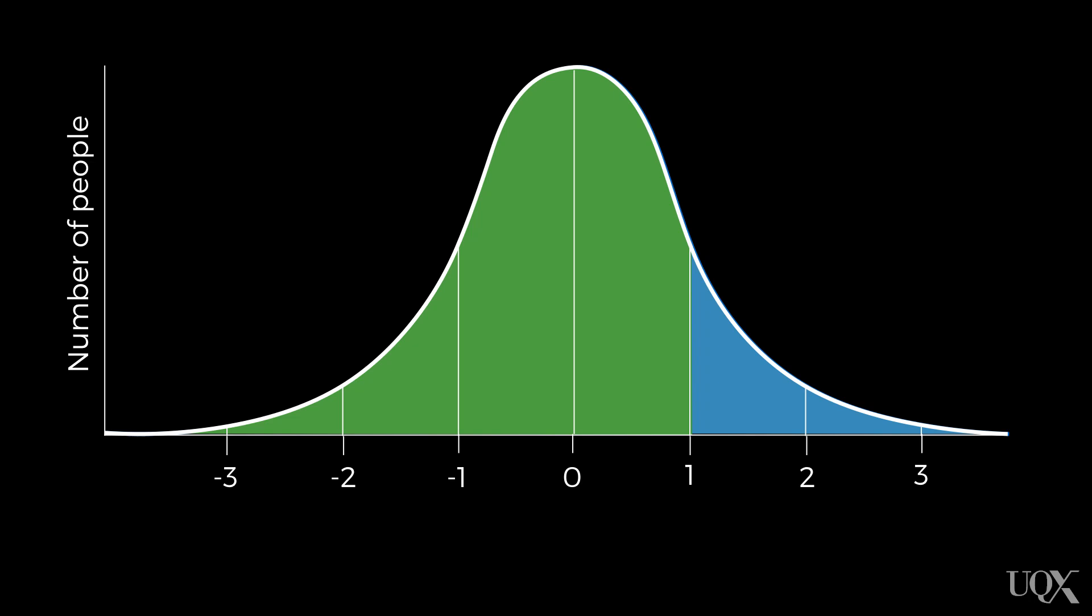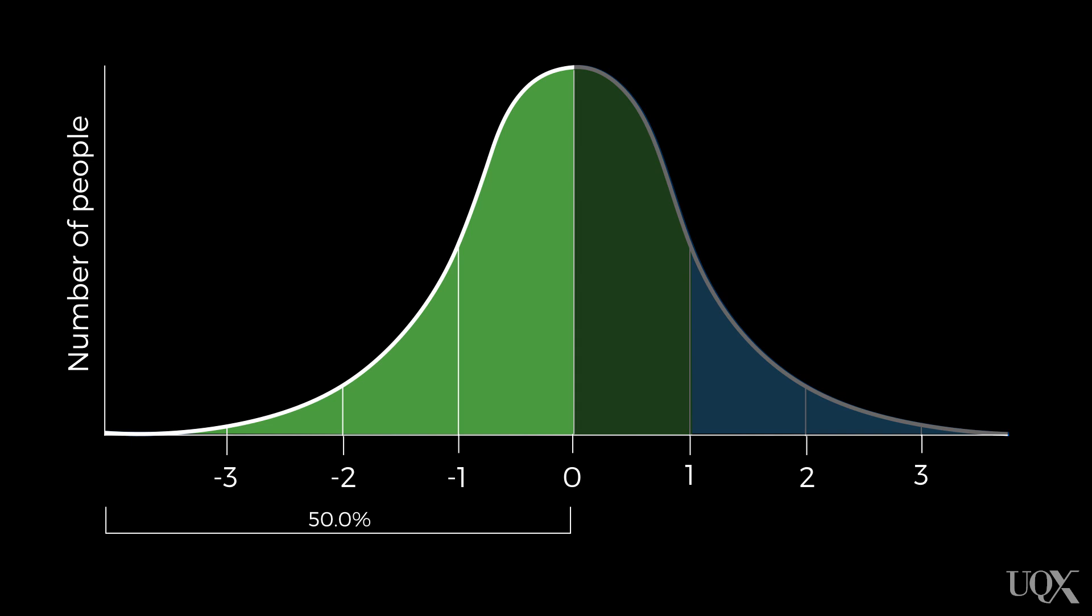With this information, we can work out how tall a 180 centimeter person is by working out the area under the curve up to that one standard deviation point. All we have to do is add up the proportion of scores in this green region. We know that this first portion here represents half of the standard normal distribution, so that's 50 percent of the scores.